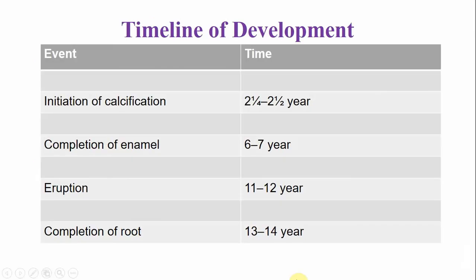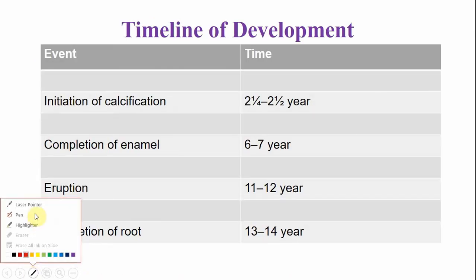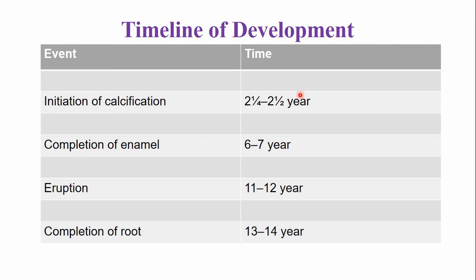The mandibular second premolar: the initiation of calcification begins by the age of around two and a half years. The crown is completed by the age of six to seven years, and the tooth emerges into the oral cavity by the age of 11 to 12 years. Adding plus two gives the age of root completion, which occurs around the age of 13 to 14 years.